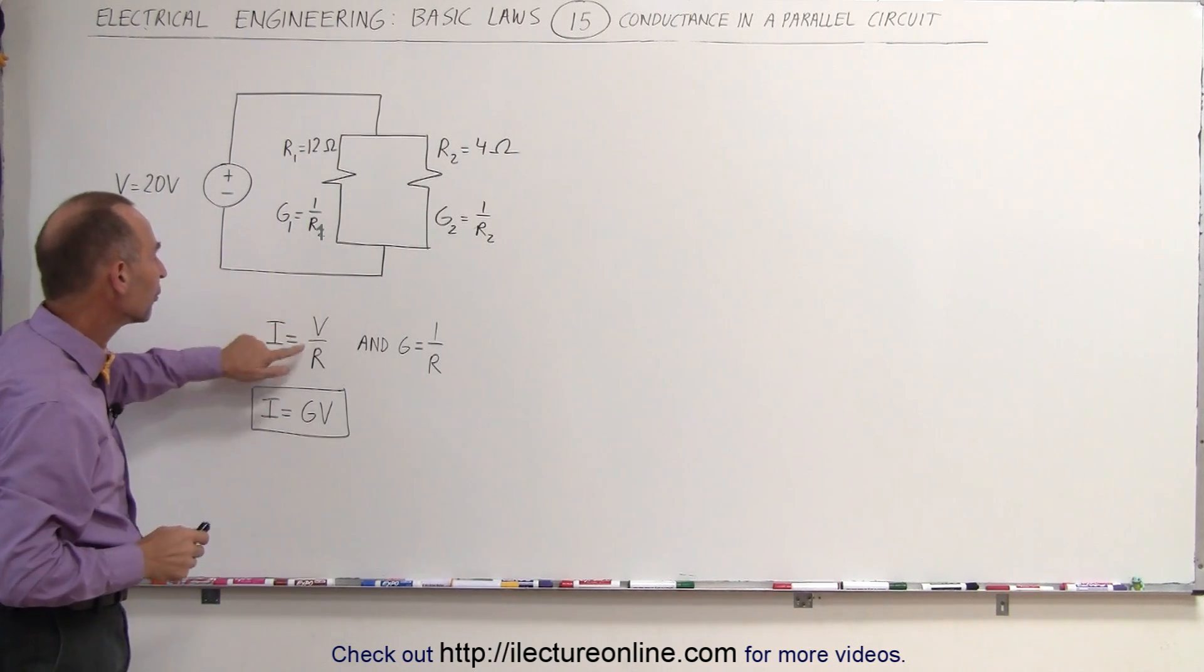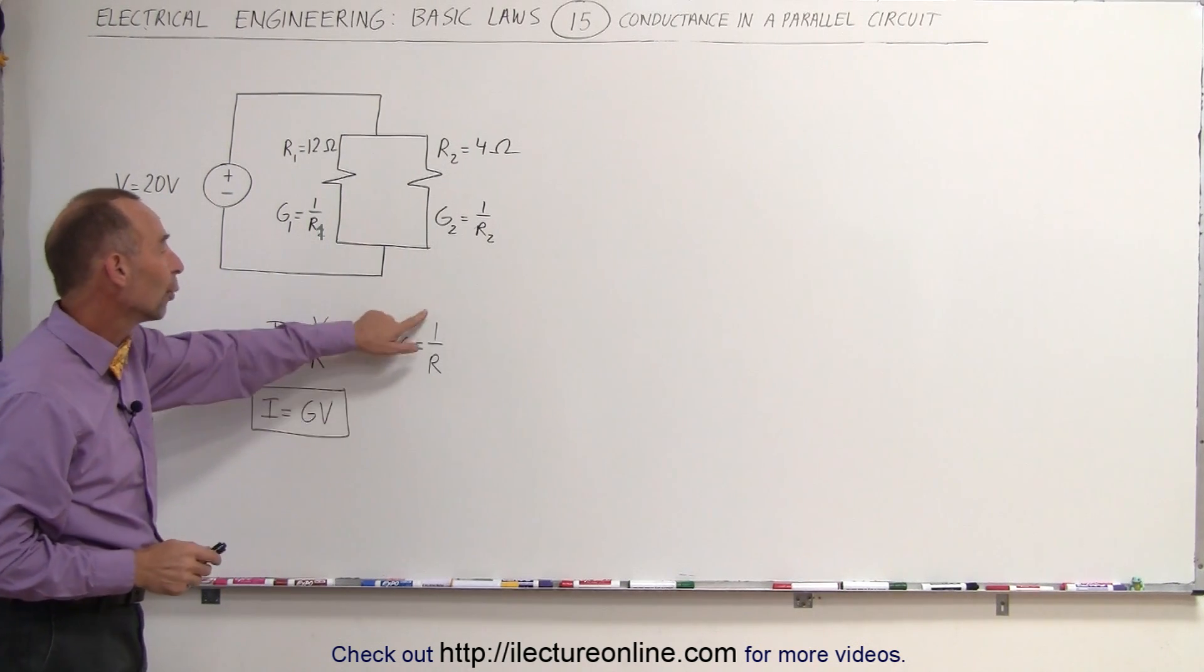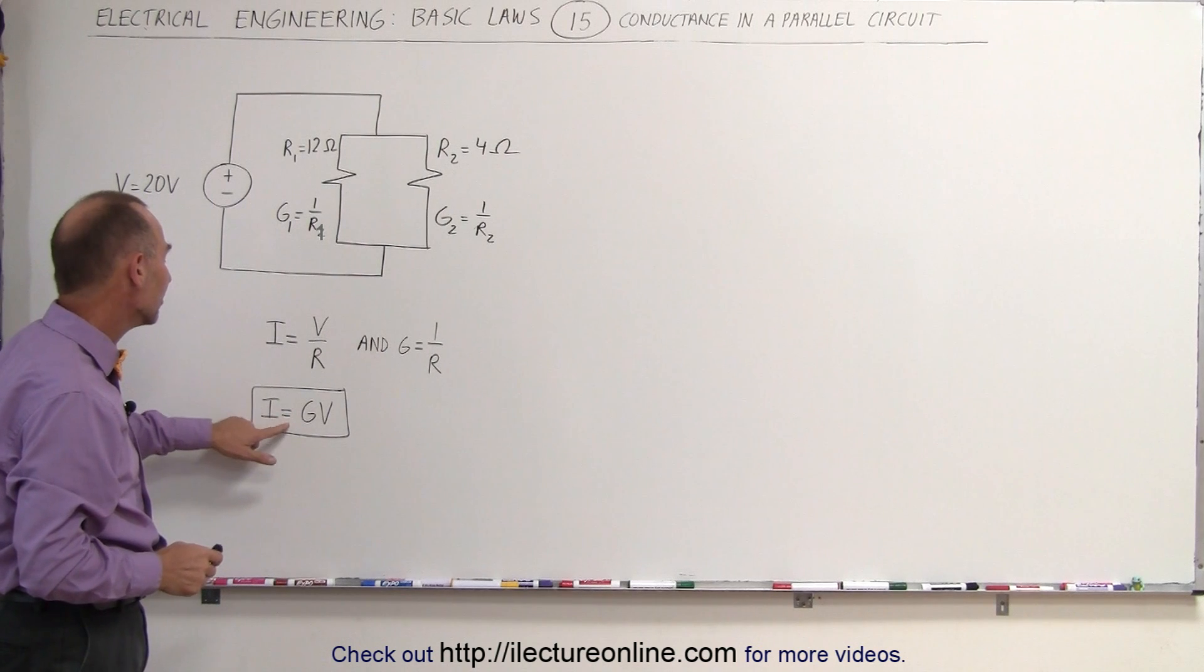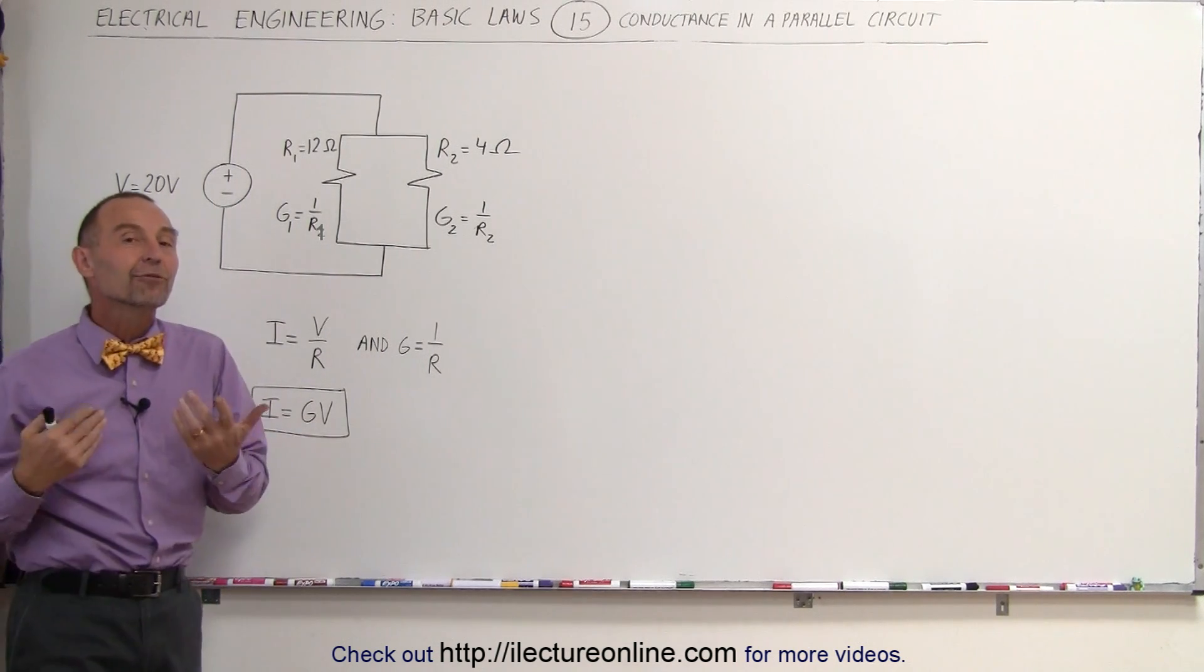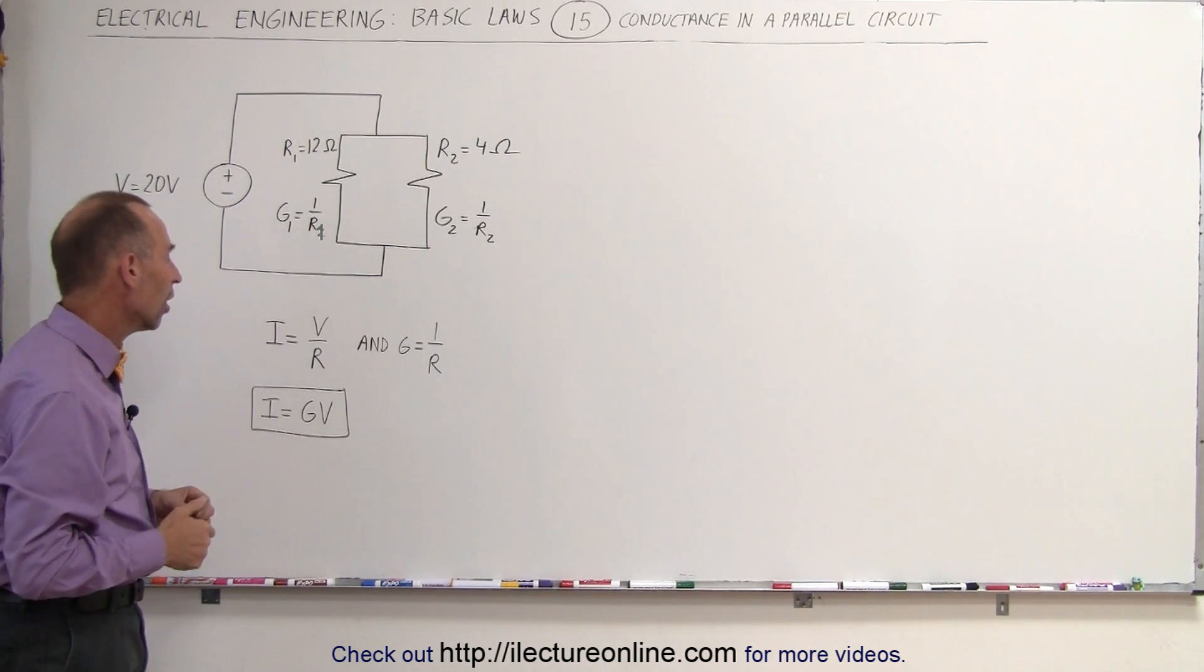Remember that Ohm's law is equal to V over R. And since G is 1 over R, we can write I is equal to G times V. So it's a different form of Ohm's law.